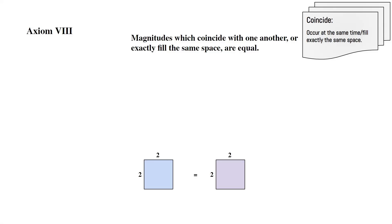Axiom 8: Magnitudes which coincide with one another or exactly fill the same space are equal. Here we have two squares — one blue, one purple. The blue square has an area of 4, and the purple square also has an area of 4. This means that the blue square is equal or congruent to the purple square.